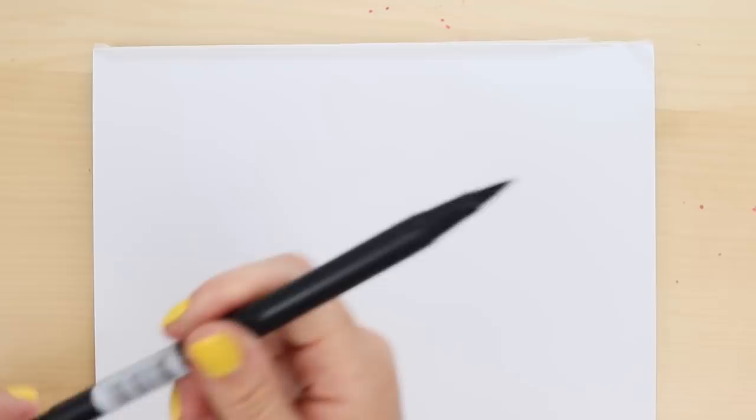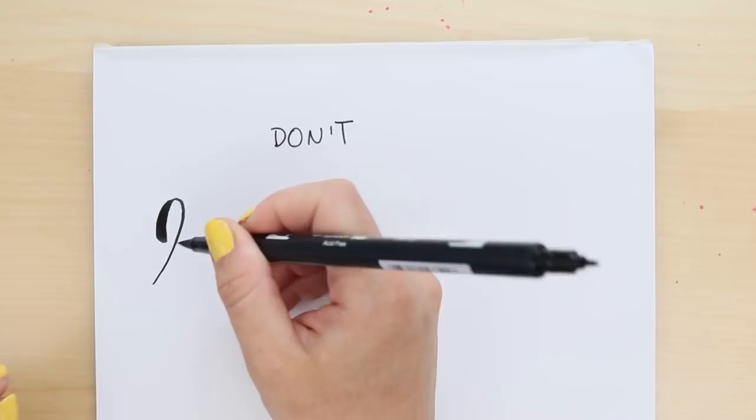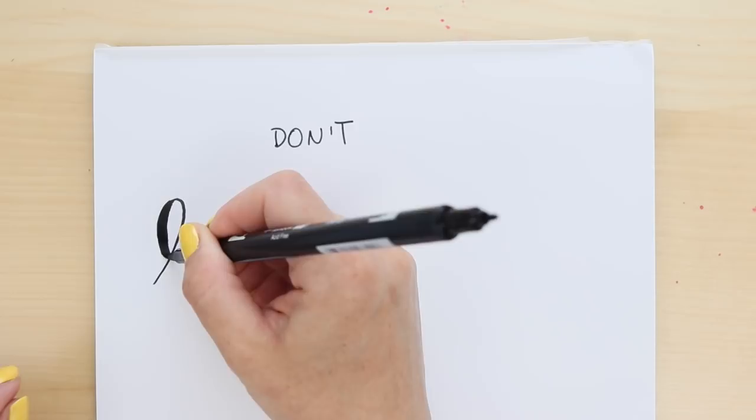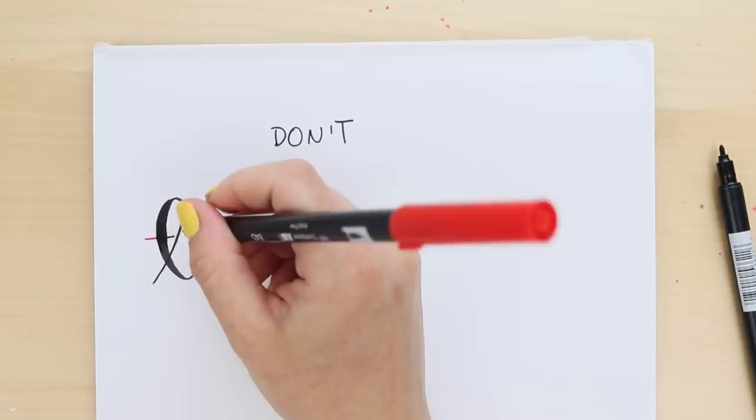All right, so let's start out with some don'ts first. So you don't want to stop right there. You don't want to stop on a downstroke, in the middle of the stroke, because now if you try to continue down, you're going to have to really try and match up that same thickness and it's always going to look a little wobbly right there. So I would say that's a big fat no-no to stop in the middle of the stroke.